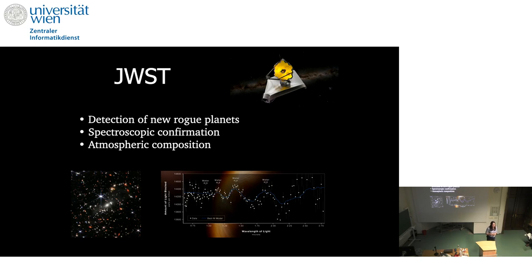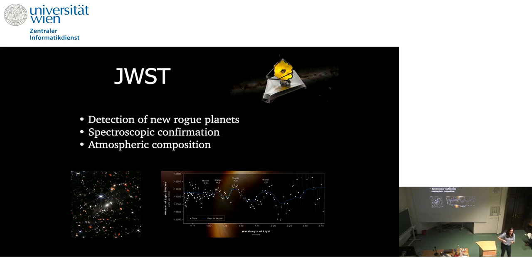Could a rogue planet be recaptured by a star? We think it could work both ways. From a theoretical point of view, it would be possible. If captured, you would call it an exoplanet, because at the moment you detect it, it's part of a planetary system. But in this case, you would expect the planet to have very different properties than the other planets in that solar system — for instance, a very elliptical or eccentric orbit, or an orbit in the opposite direction of the majority of planets. These things would make you think that this was an outsider, and in fact not a native part of the planetary system.